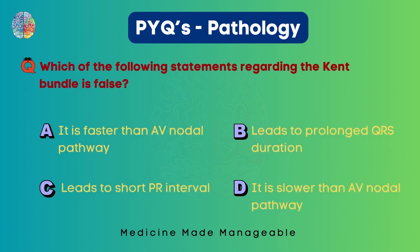Which of the following statements regarding the Bundle of Kent is false? It is faster than the AV nodal pathway, it leads to prolonged QRS duration, it leads to short PR interval, or it is slower than the AV nodal pathway. Options A and D are total opposites — the Bundle of Kent can't be both faster and slower simultaneously — so we can automatically eliminate options B and C.